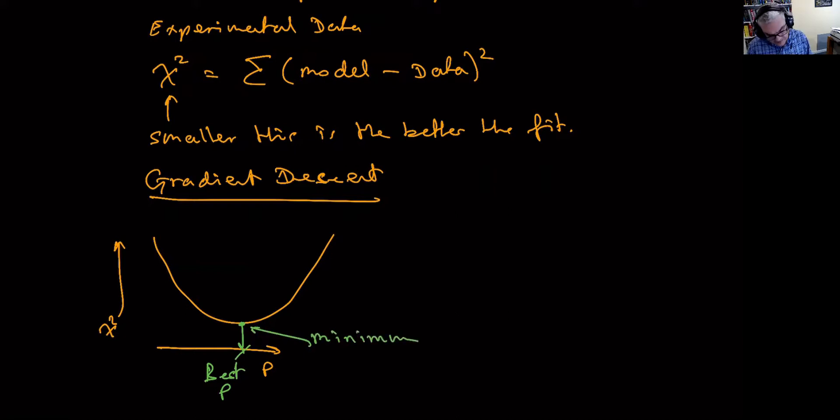And we're trying to find that minimum. And the way we do that with gradient descent, we have to pick some random value for the parameter initially. Let's say we picked a value for the parameter there. That gives us a chi-squared. And with gradient descent, what we do is we compute the slope at this point, and we move down the slope. And we keep doing this in an iterative manner until hopefully we arrive at the minimum.